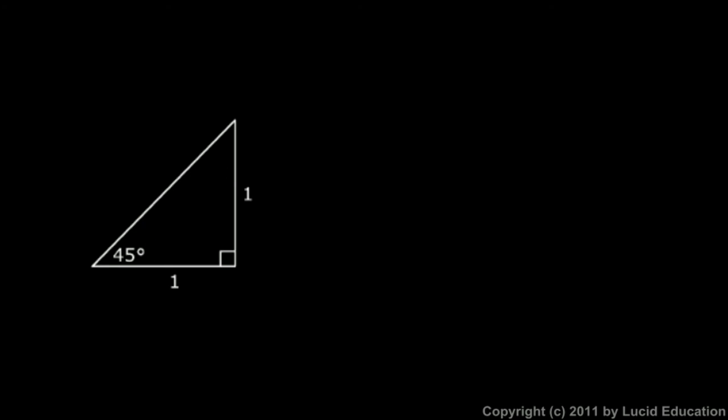Now remember what we know about 45-45-90 triangles. This is the hypotenuse, I'll call it H. And according to the Pythagorean theorem, the hypotenuse has to be the square root of this squared plus this squared. Well, that's easy. One squared plus one squared is just two. So the hypotenuse of this triangle is the square root of two.